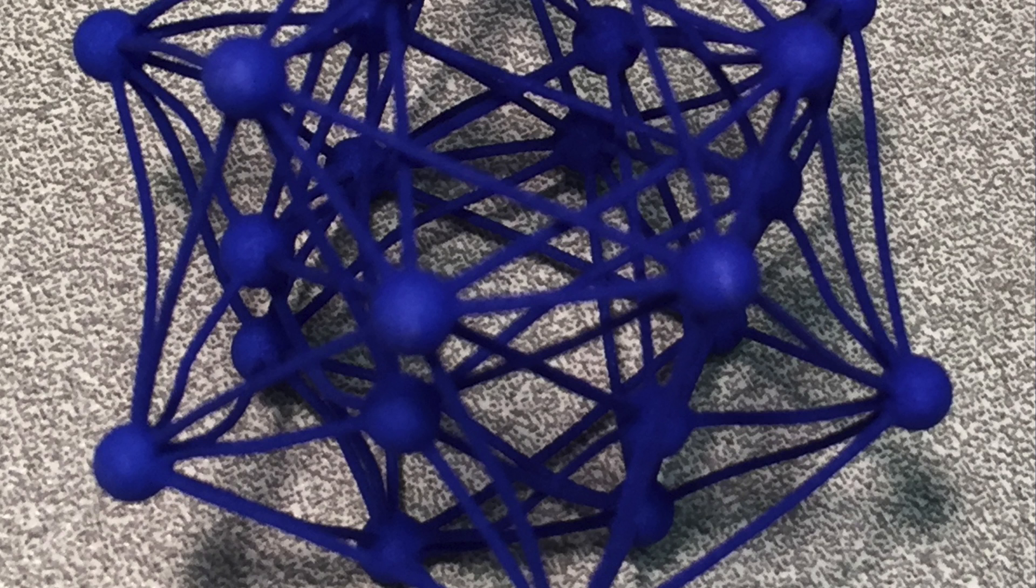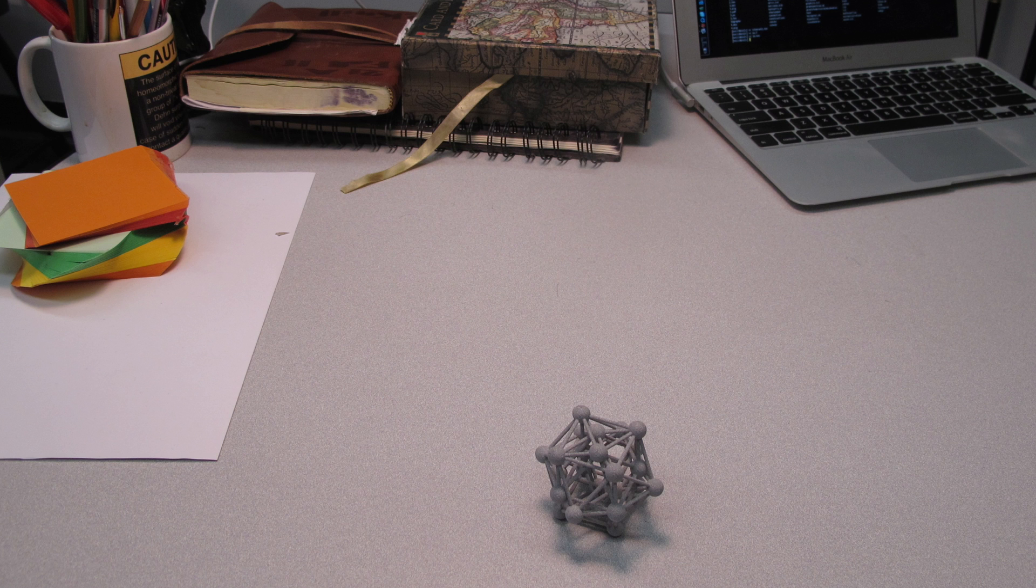This is a printout of the 24-cell, which is also the unique group in the quaternion integers. I had been obsessed with the quaternion primes during the summer, this summer. Here's an older version from 2012, the same 24-cell, done in another material.